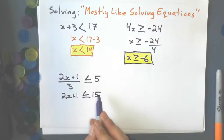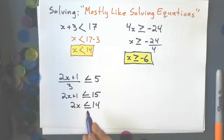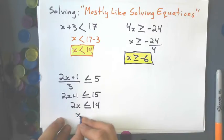Next, I'm going to subtract the other side by 1, because I'm doing the opposite operation, and I get 2x ≤ 14. And finally, my last step is to divide by the coefficient, which is 2. 14 divided by 2 is 7. So I get x ≤ 7.